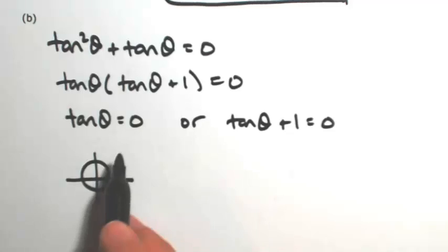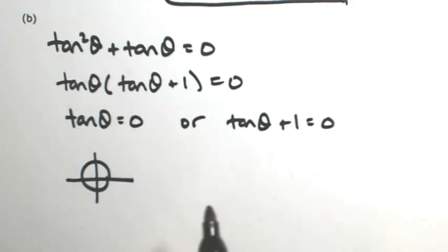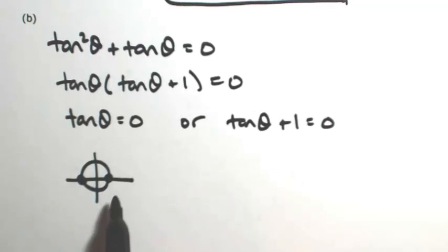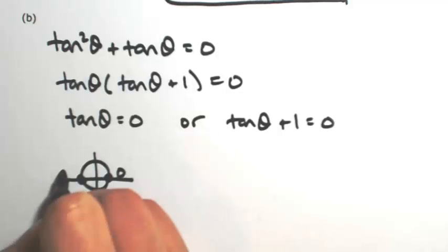So looking for where the y coordinate divided by the x coordinate is 0 would be at (1, 0) and (negative 1, 0). So we have 0 and π.